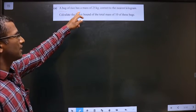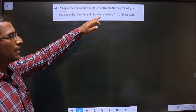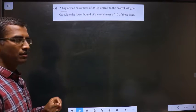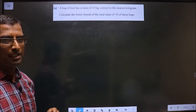A bag of rice has a mass of 25 kg, correct to the nearest kilogram. First, let us write lower and upper bound for the given number.